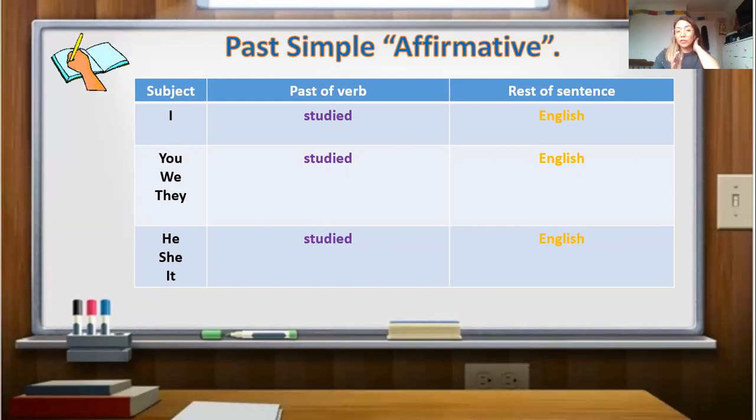After the subject, luego del sujeto, you have to include the past form of a verb. In this case, I chose the verb study. Estudiar. But I transformed the verb into past, which is studied. Transformé el verbo study a pasado que es studied, en pasado. And finally, we have to include the rest of the sentence. In this case, I chose the word English. El rest of the sentence es, no siempre es obligación, pero yo siempre lo recomiendo, utilizarlo para darle una mejor coherencia a nuestra oración.